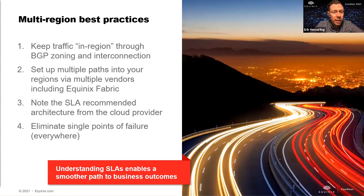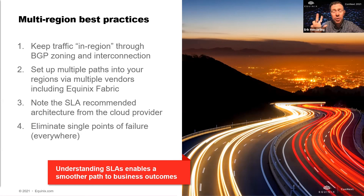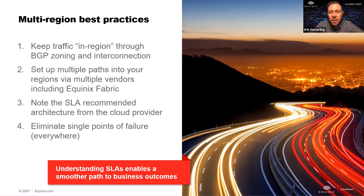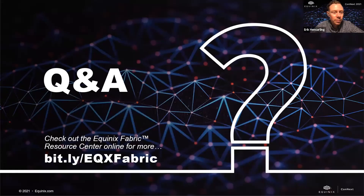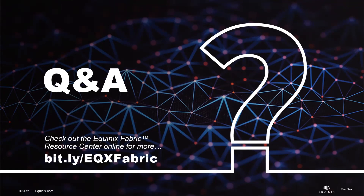We're at about one minute left. Let me run back through some key takeaways: keep traffic in region, set up multiple paths, and go unpack that SLA — look at your vendor's SLA specifically — and eliminate single points of failure everywhere, just like we did on the Fabric. With that, let's skip the poll and see if there are any other questions. No further questions in the chat. Well, I want to thank the audience again. Brian, thank you for the awesome intro. And I want to thank my colleague Eric Zinder for being here and supporting me — he's been great handling the Q&A. Thanks again to everyone.